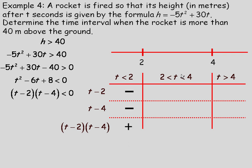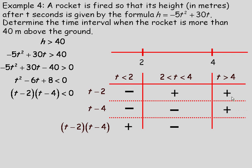For numbers between 2 and 4, test 3: 3 minus 2 is 1, so positive. But 3 minus 4 is negative 1, so negative. The product of a positive and a negative is negative. For the interval above 4: any number above 4 minus 2 is positive, and above 4 minus 4 is also positive. The product of two positives is positive.